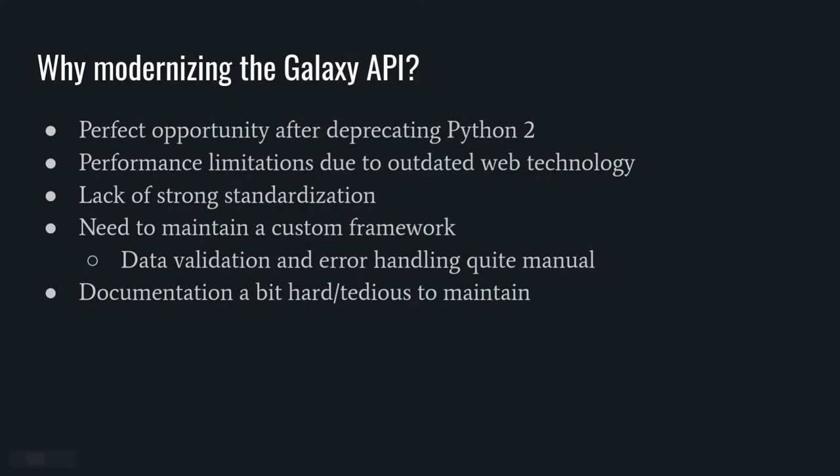So, why modernize the API? Well, the code base was initially developed using Python 2 a really long time ago, especially in terms of programming. It eventually evolved and grew with the technology available at the time, and it turned into a custom framework developed to simplify and unify the handling of API requests, data serialization, etc. This of course offers great flexibility, but also, like any other code base that gets old enough, it comes with a maintainability burden.